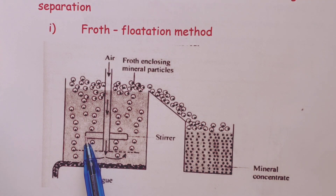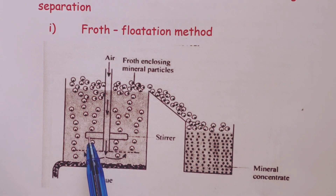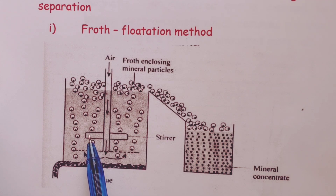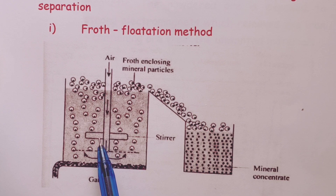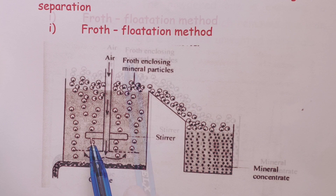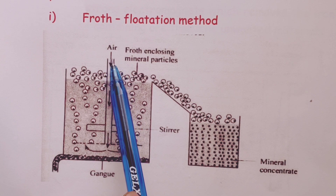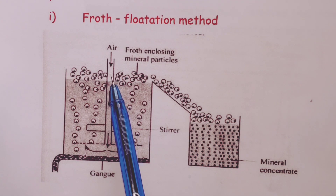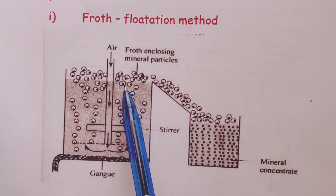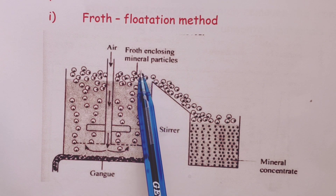What happens is that the mineral-bearing particles become surrounded by a film of oil, while sand and soil particles are wetted by water. Once we have a film of oil surrounding our mineral-bearing particles and sand and soil particles wetted by water, we then bring in a stream of air that is blown into the mixture. When we do this, bubbles form, which then enclose the oil-covered mineral particles and carry them to the top of the large container where they form froth.